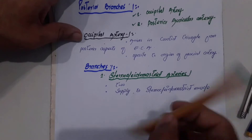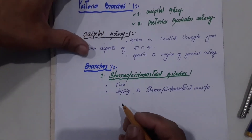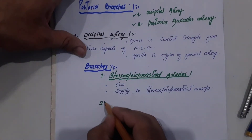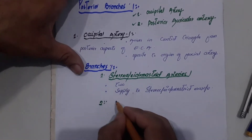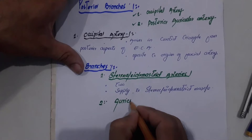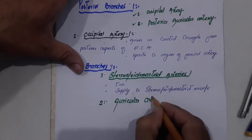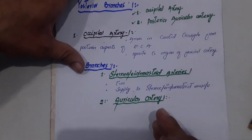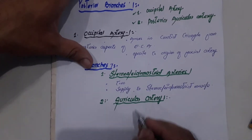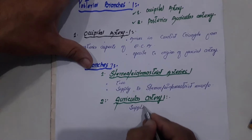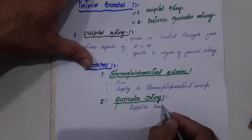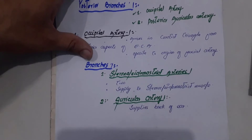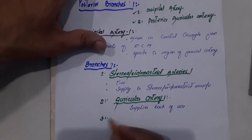The second branch that arises from the occipital artery is the auricular artery. As its name suggests, 'auricle' means ear, so this artery supplies the back of the ear.